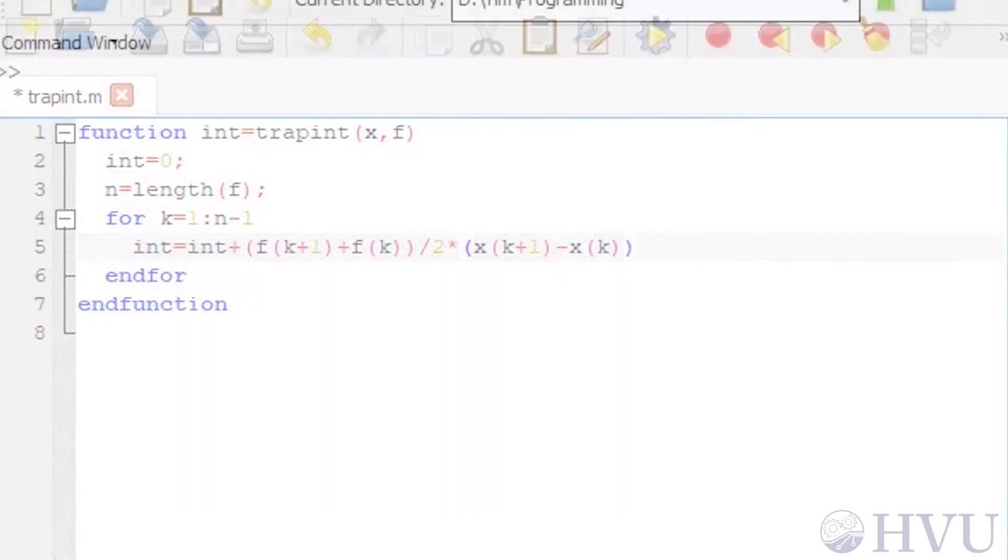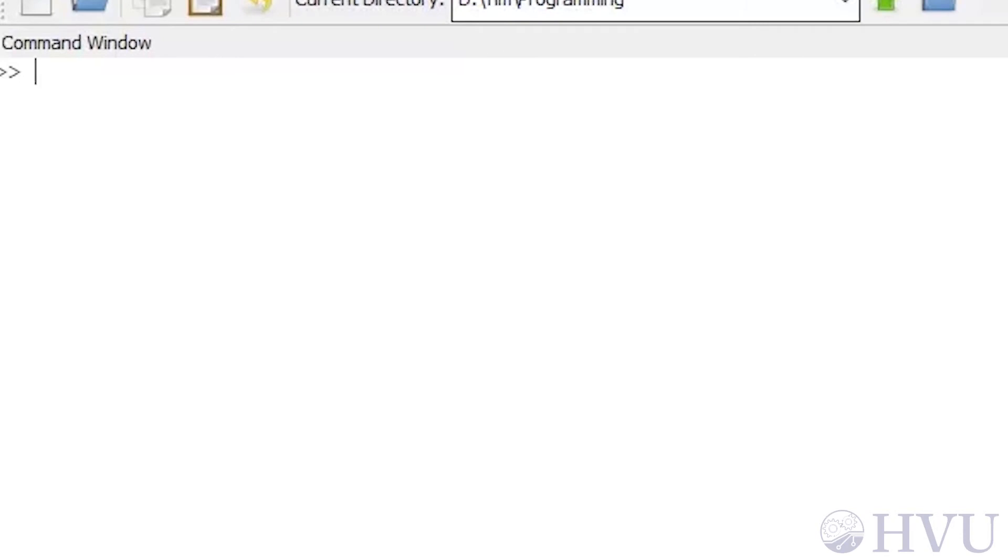Save the file. Back in the command window, I'm going to integrate the function x squared plus 1 between 0 and 1. I'll use a step size of 0.1 in the x direction, so my x values will be x equals 0 colon 0.1 colon 1. The corresponding y values will be y equals x dot carat 2 plus 1.